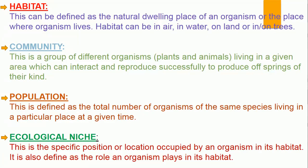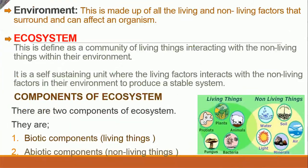The next concept is ecological niche. A niche is a specific position or location occupied by an organism in its habitat. It is also known as the role an organism plays in its habitat. For example, in a classroom, if your classroom is your habitat, your sitting position is your niche. In a forest, a worm is found in the soil — that is its niche. A butterfly is located near flowers. Termites can be found on dead wood. A niche can also refer to the role or function an organism carries out in its habitat.